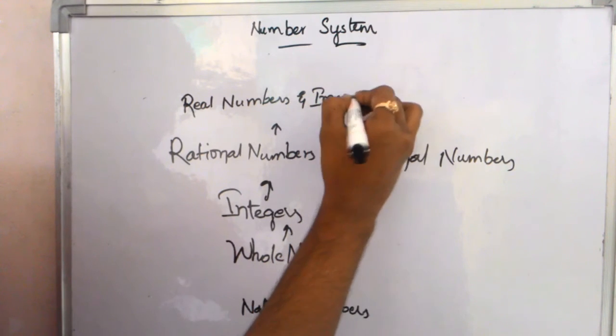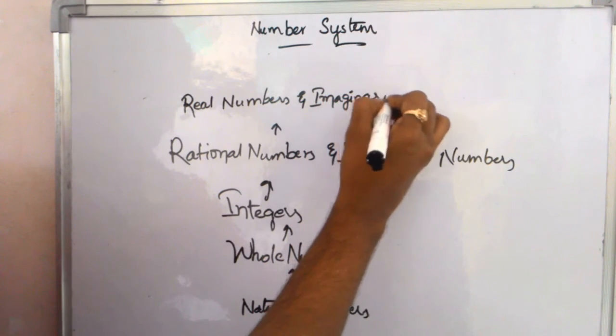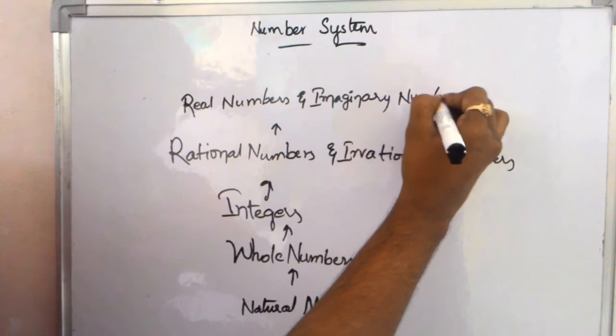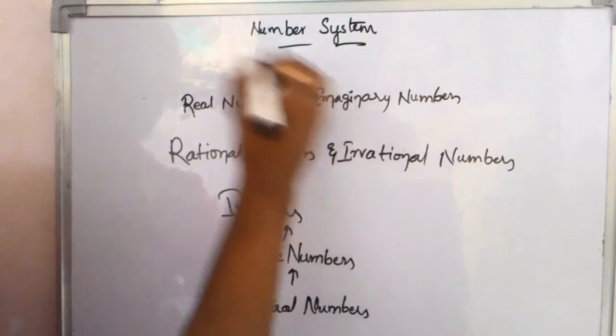And imaginary numbers: minus root 4, minus root 16, i, i4, i3. These are in imaginary numbers.